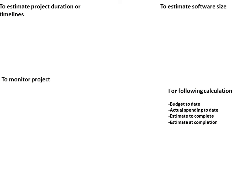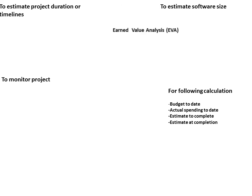Let us recap what we learned in the last slide. Earned Value Analysis — where does it belong? It should come when specific details with respect to budget to date, actual spending to date, estimate to complete, or estimated completion are given.